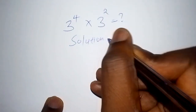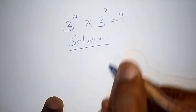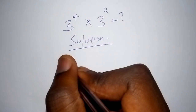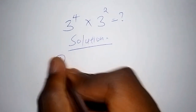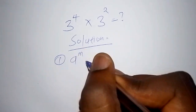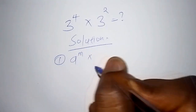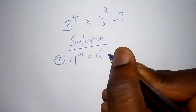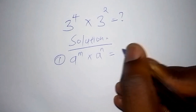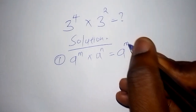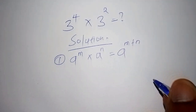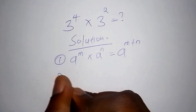The first law — Law 1 — says that a to the power of m multiplied by a to the power of n is equal to a to the power of m plus n.